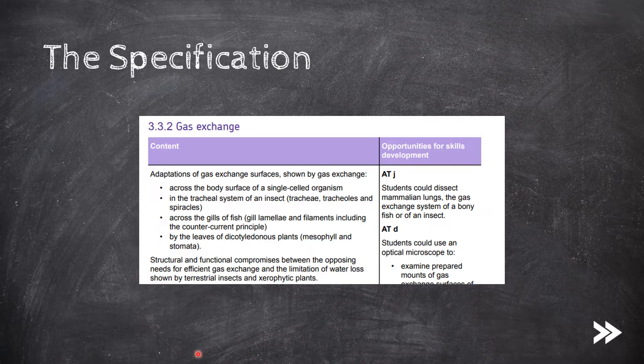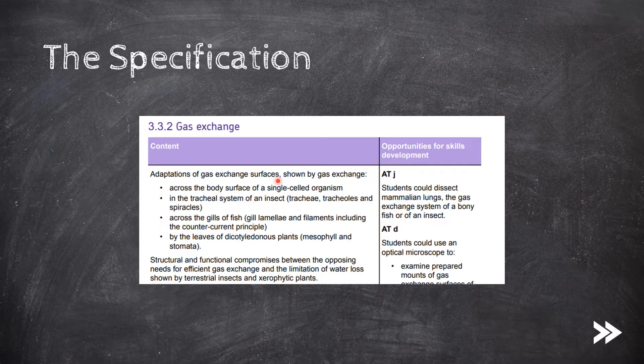So the specification wants us to have a look at adaptations of various gas exchange surfaces, including the surfaces of single-celled organisms, the insect tracheal system, the gills of fish and the leaves of dicotyledonous plants. Then the spec also wants us to look at the structural and functional compromises between having efficient gas exchange whilst limiting water loss, with a focus on terrestrial insects and xerophytic plants. This is what we'll look at in part 1.